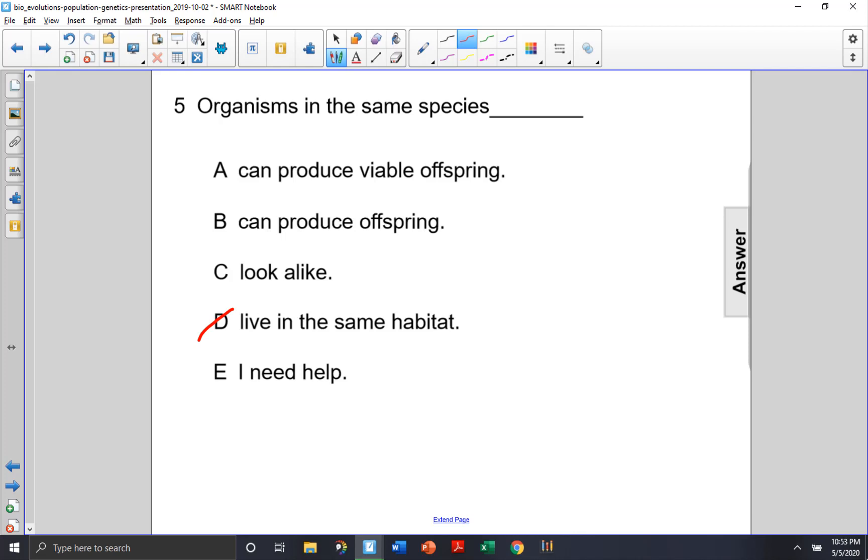Choice C: look alike. That could be a good answer. But let's remember that mice and rats look alike in some ways, but they are not the same species. So choice C is not the best answer either.